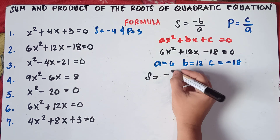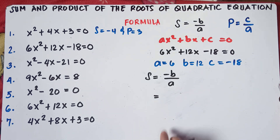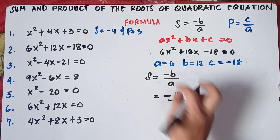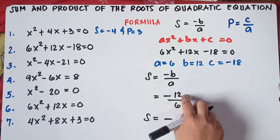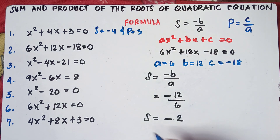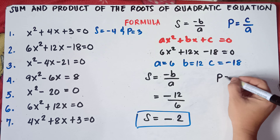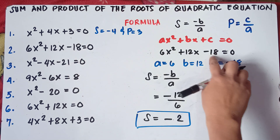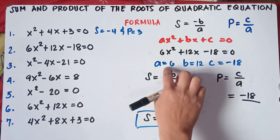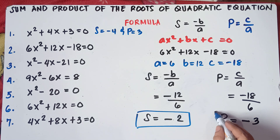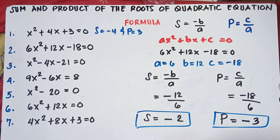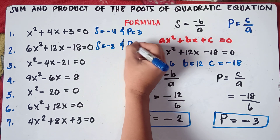Find the sum: sum equals negative B over A. Copy negative sign — it's already in the formula. B is 12 and A is positive 6. Negative divided by positive is negative, so 12 divided by 6 is 2. The sum is negative 2. For the product, C over A: C is negative 18, A is positive 6. Negative divided by positive is negative. 18 divided by 6 is 3. So the product is negative 3. Our sum is negative 2 and the product is negative 3.